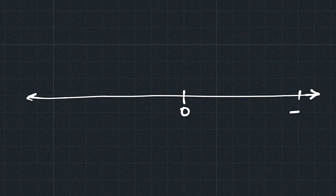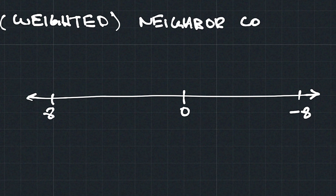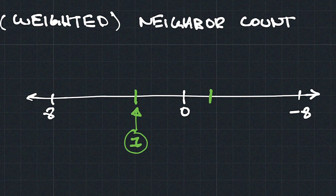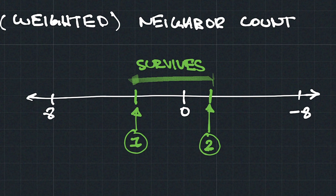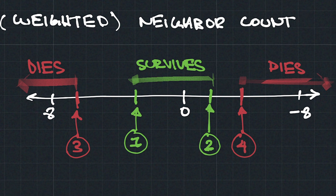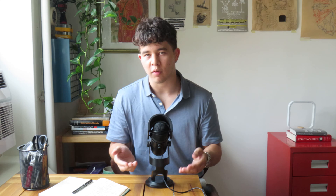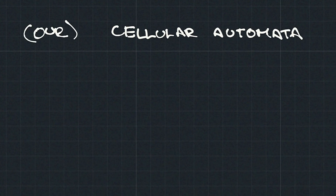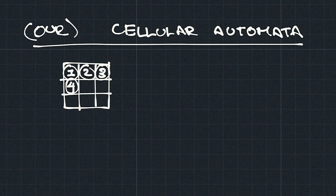For our purposes, we can make each of these threshold numbers a parameter, and there are five of them. For a living cell, if the neighbor count multiplied by those eight parameters is between these two numbers, the cell survives. If it's outside of that range, the cell dies. For a dead cell, if the neighbor count is equal to this number, the cell becomes alive. So we can now define a cellular automata, or a game of life, based on these eight plus five equals 13 parameters.